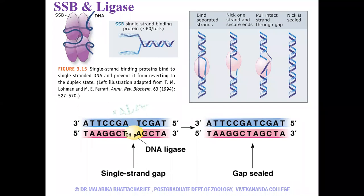This is a picture of how ligase functions. The ligase sees the gap between one nucleotide. The three prime end provides the OH and the five prime end of the newly synthesized daughter strand creates a single nucleotide gap. This gap is the nick, and it is sealed by DNA ligase. So this is how DNA ligase functions.